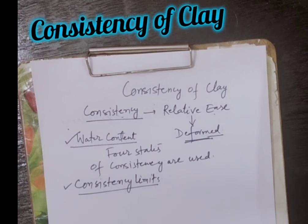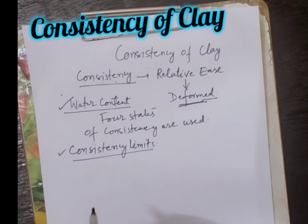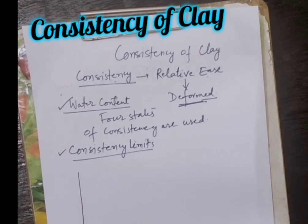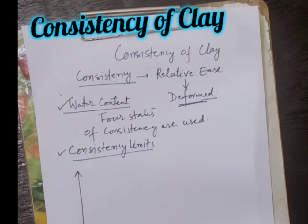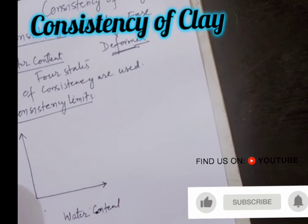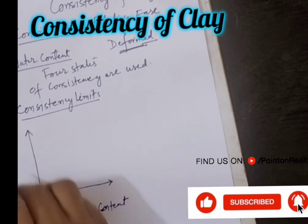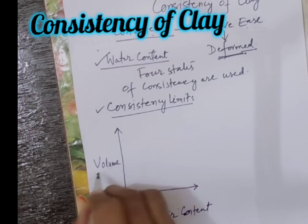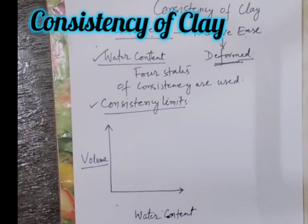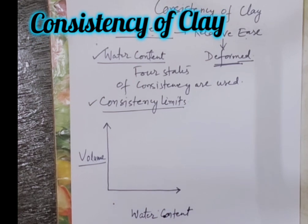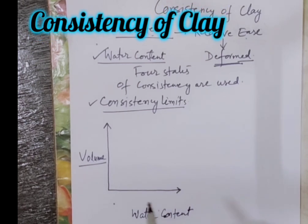What are these consistency limits? To understand consistency limits, first of all take some soil sample and plot a graph between the water content and the volume of the soil. And what will happen?